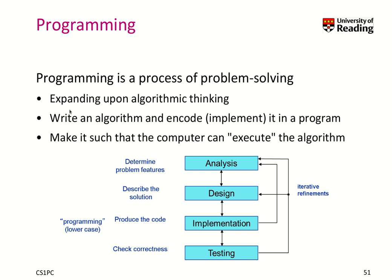Programming is a process of problem solving — it expands upon algorithmic thinking. You write an algorithm and encode it, implementing it in a program so that a computer can execute it. Here is a general graph: you analyze the problem by determining its features, you describe the solution in a design, you produce the code by implementing it, and then you check correctness through testing. At any stage, we can go back to a previous stage. It's really an iterative process — you should not try to do everything step by step and hope the code runs.